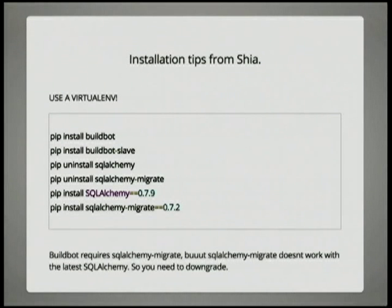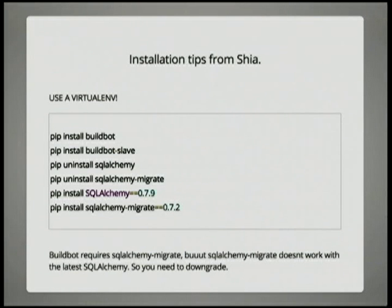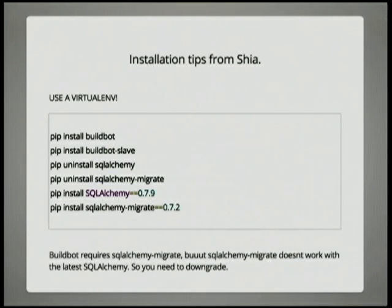These are installation tips from Shia that he hit along the way. Obviously, use a virtual env — if you're not, use one. The latest version of BuildBot — I think it's 0.8.7 — has a little bit of a quirk, which is that it requires SQLAlchemy and SQLAlchemy Migrate, but it installs by default through pip install SQLAlchemy 8, and SQLAlchemy Migrate doesn't work with SQLAlchemy 8. So you basically just need to go back a version. I'm not sure what they're doing about that, but it's a fairly minor thing.